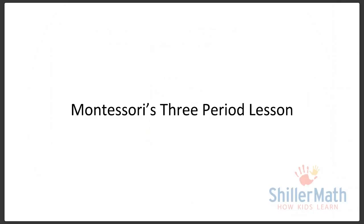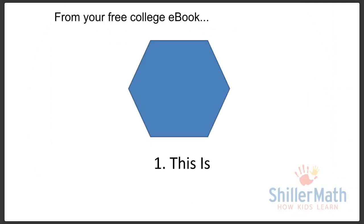It's always used to introduce anything new, say, a hexagon. Now, you all got the free college ebook. We love that, college for three-year-olds. That's what we're ultimately preparing for. And this first period or the first step in the Montessori three-period lesson is 'this is.'